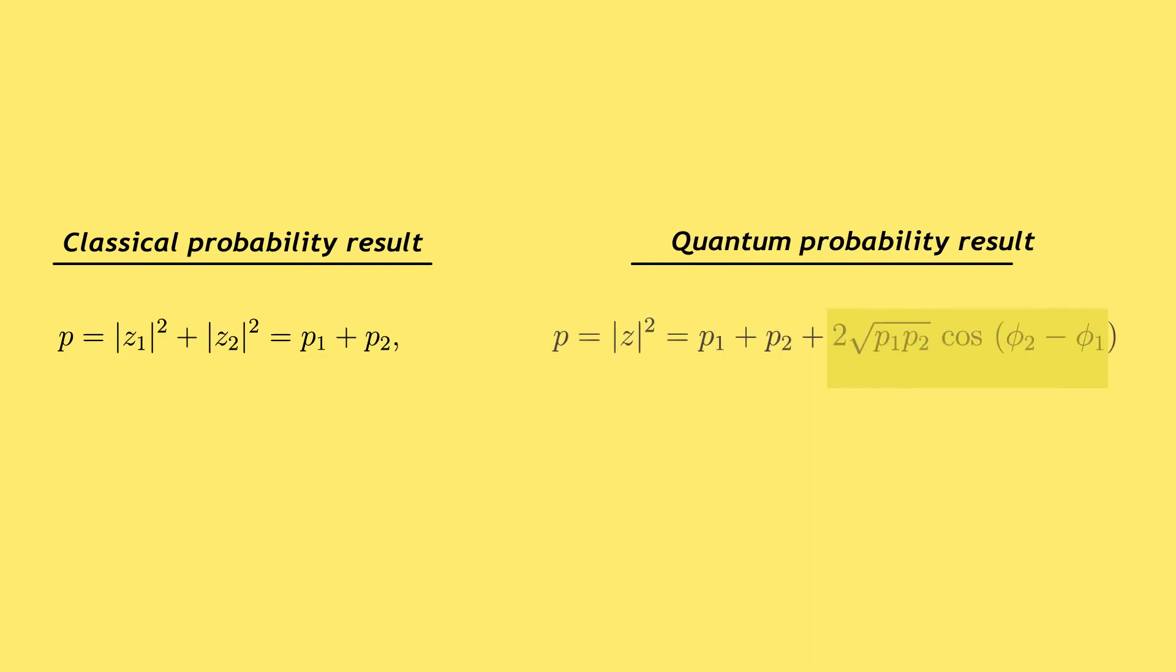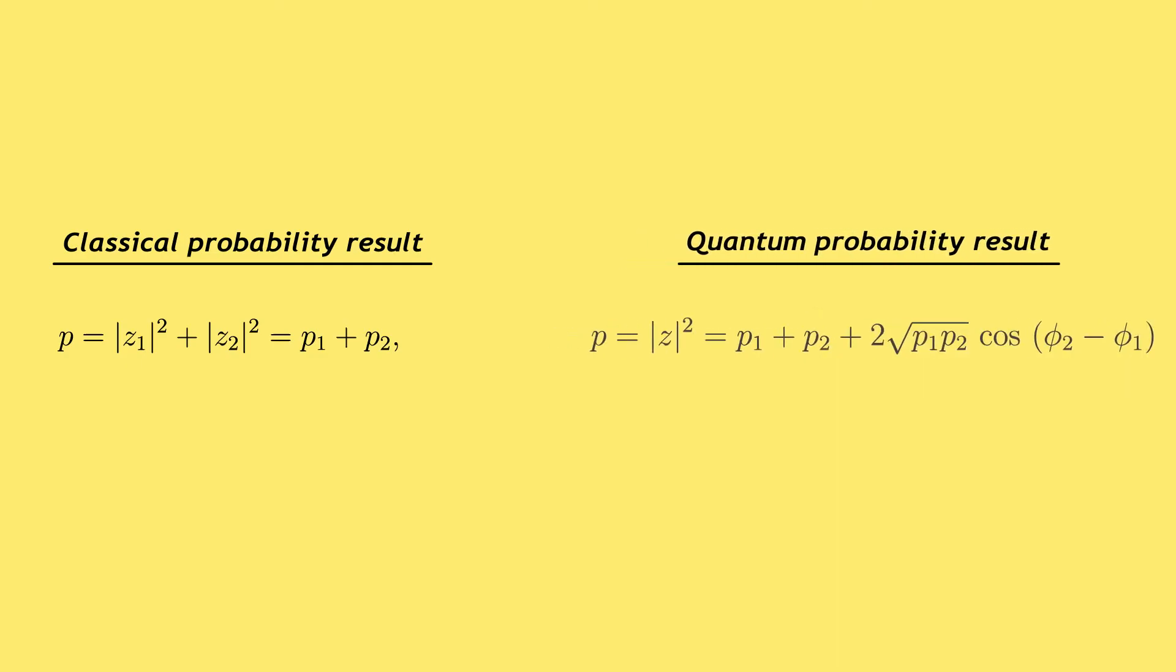The interference term can be negative or positive. If it is negative, we call it destructive interference, and if it is positive, we call it constructive interference.